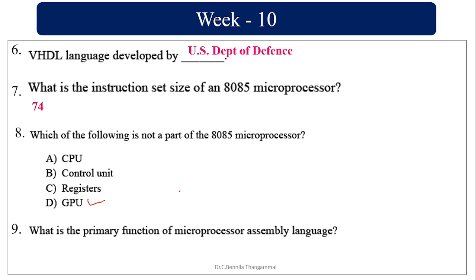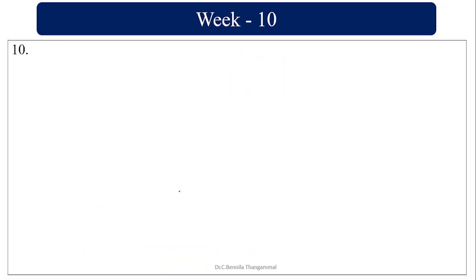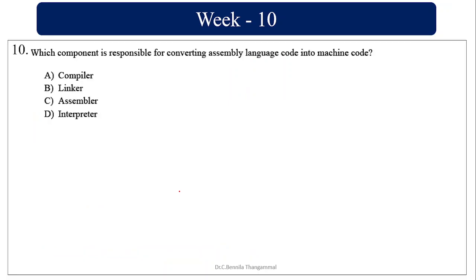What is the primary function of a microprocessor assembly language? It is to provide a low-level programming interface. Which component is responsible for converting assembly language into machine code? It is an assembler, because a compiler converts high-level language into machine code before the program executes.